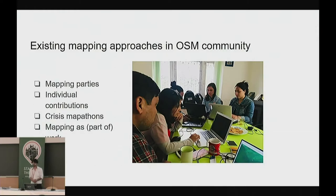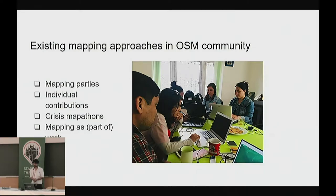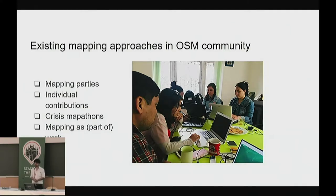Let's start with existing approaches in the OpenStreetMap community. As vibrant members of the community, we know about mapping parties, individual contributions, and crisis mapathons — these are the more popular ones. Recently we have also seen various companies like Facebook, Mapbox, and Apple employing people to contribute data and maintain data quality as part of their work.